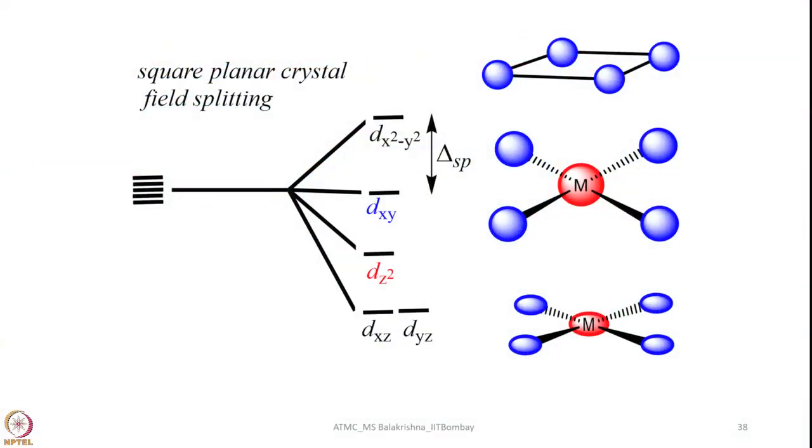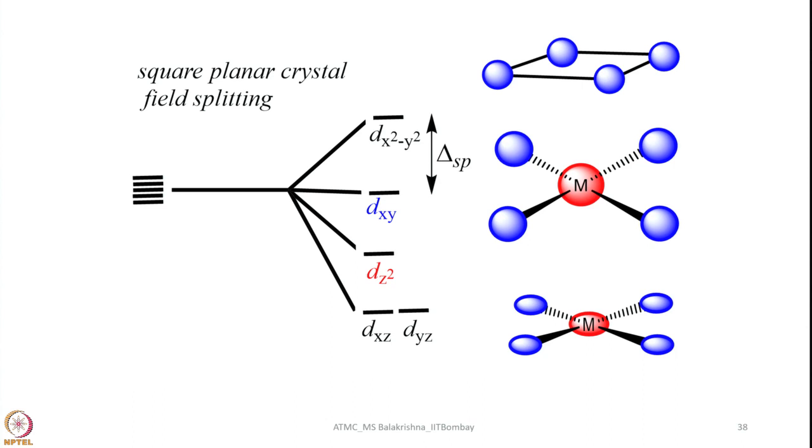First let us look into the square planar crystal field splitting that you are all familiar and also I showed in my previous lecture how they split. You can see here 4 ligands are in the plane and if you assume molecule is sitting with z axis perpendicular to the plane of the molecule that means molecule is placed along x and y plane. So that we have 4 ligands approaching along x minus x and y minus y direction and no ligands are approaching along z direction.